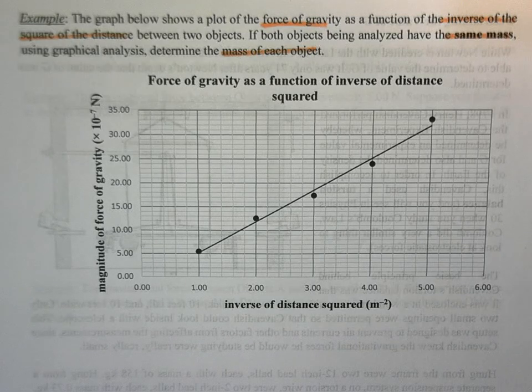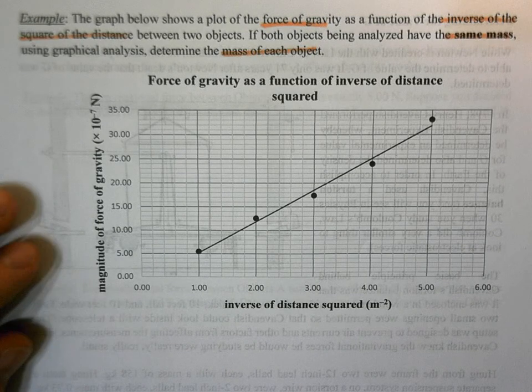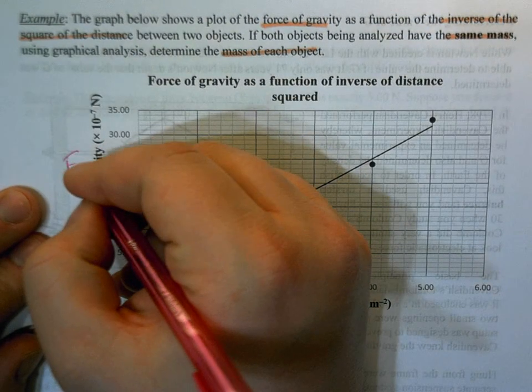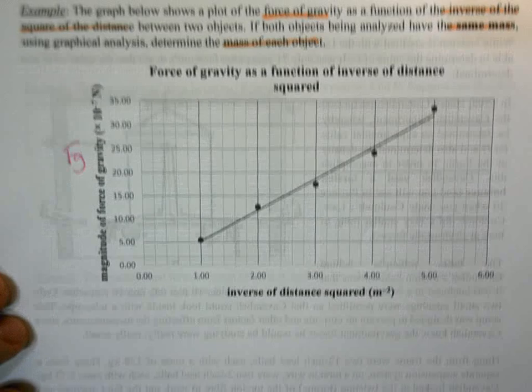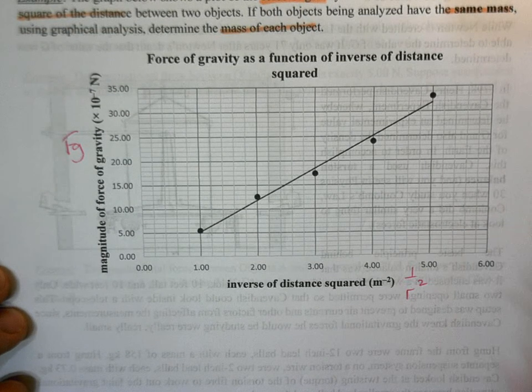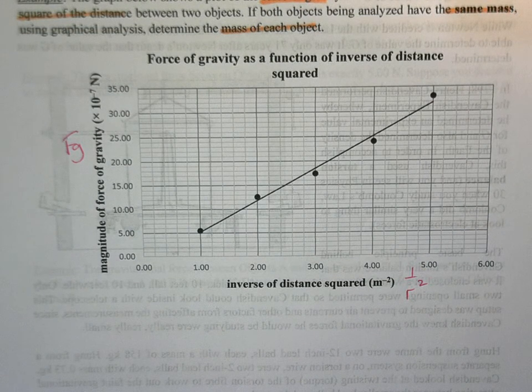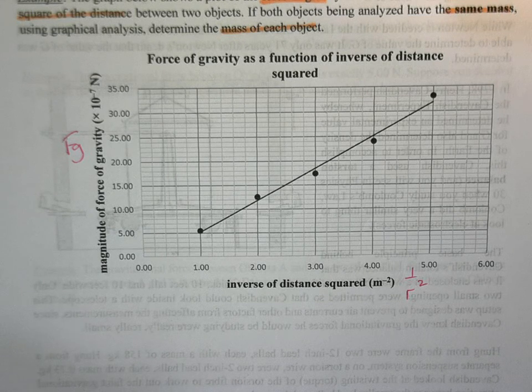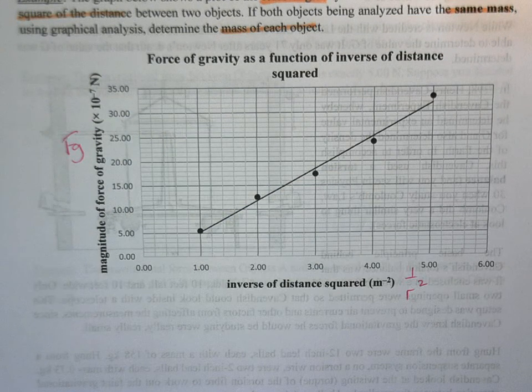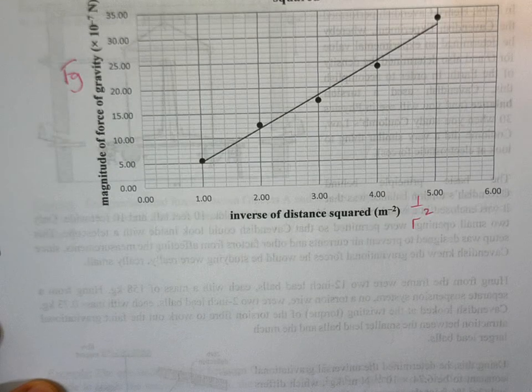Okay, so first and foremost, what do we have? We are told that we have FG on the y-axis, and we're told that we have one over r squared on the x-axis. Now for all of these questions with the graph, the first thing we need is an equation.